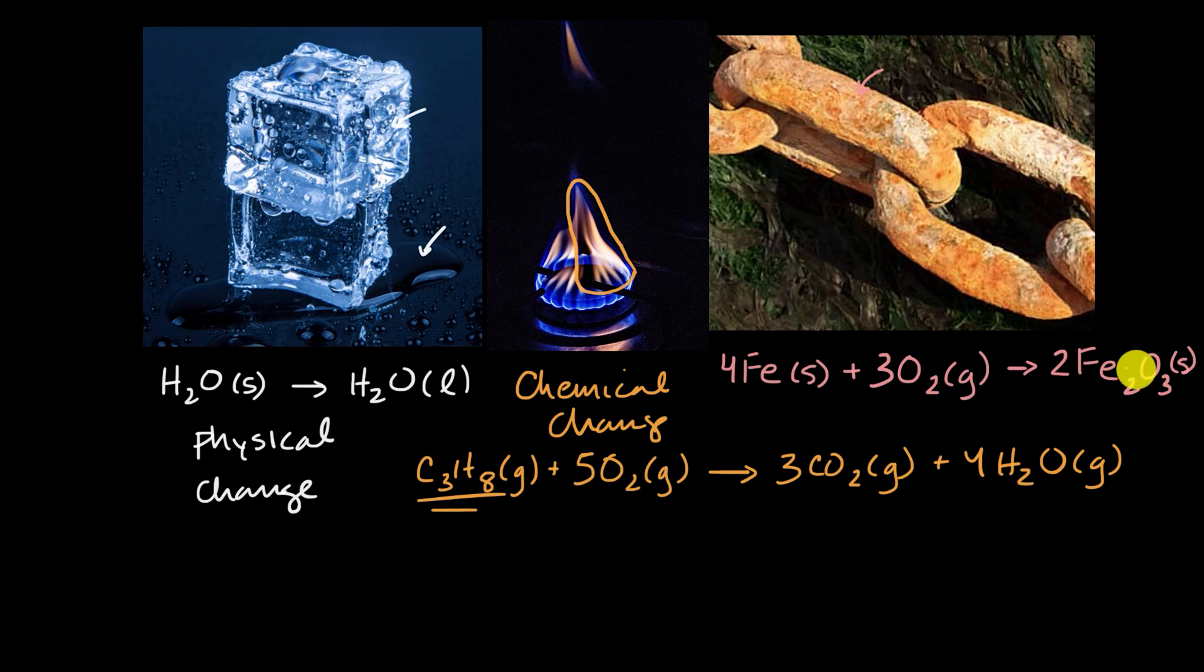So notice, this reaction is forming new ionic bonds in that ferrous oxide. And to undergo the reaction, we had to break the metallic bonds of the solid iron and the covalent bonds in the molecular oxygen. So anytime we are breaking and making these chemical bonds, we have a chemical change.